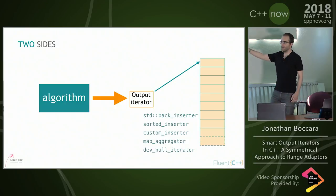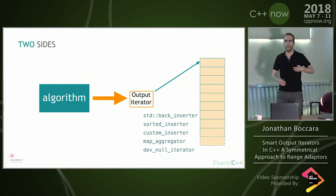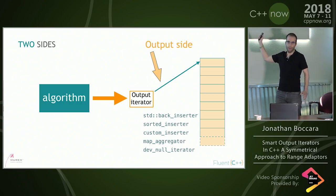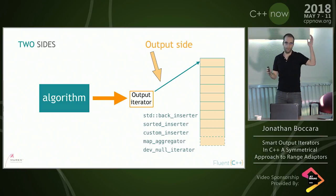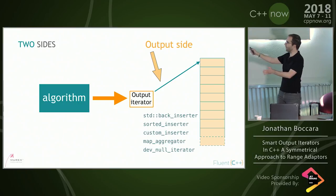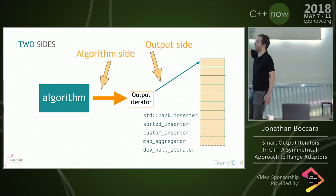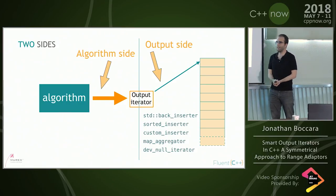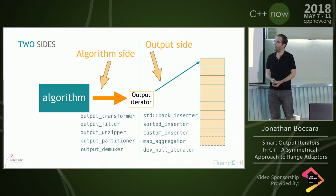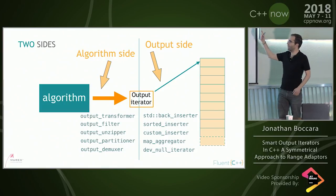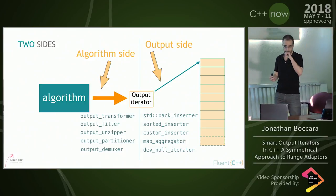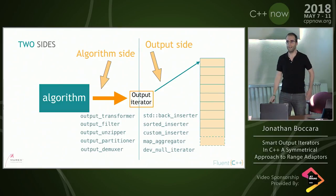I think output iterators can be conceptually separated into two parts. The first part is concerned with the output container. The second part does things related to algorithms — specifically, things typically done in algorithms that could be offloaded to an output iterator.